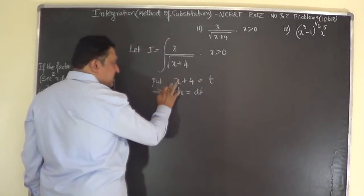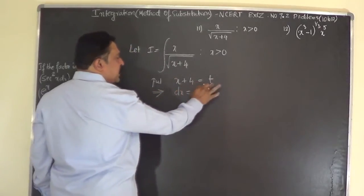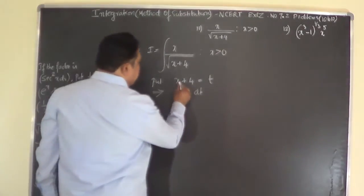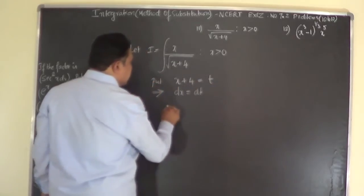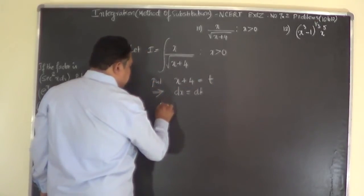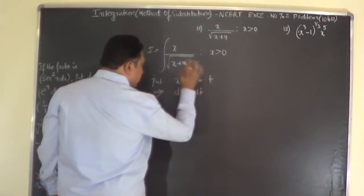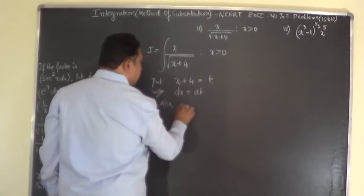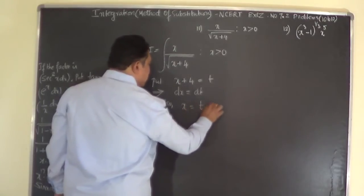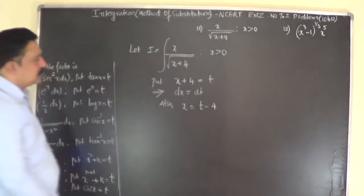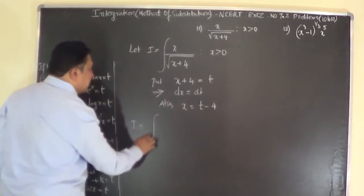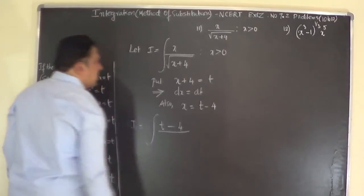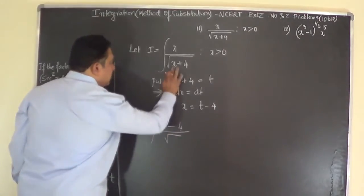Differentiating x plus 4 equals t: the differential coefficient of x is 1 and of 4 is 0, so dx equals dt. Also, if x plus 4 equals t, then x equals t minus 4. So I becomes the integral of (t minus 4) over √t into dx, and dx is dt.